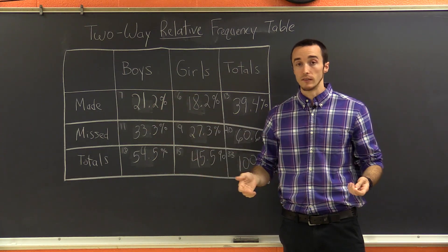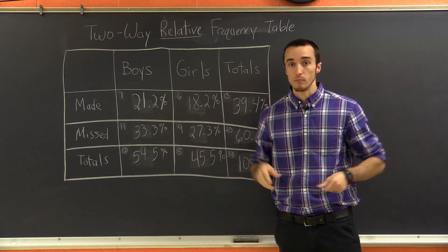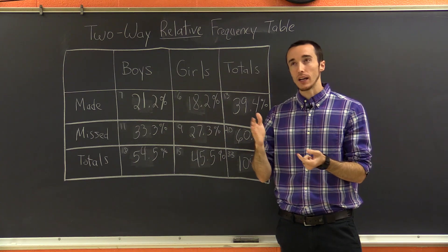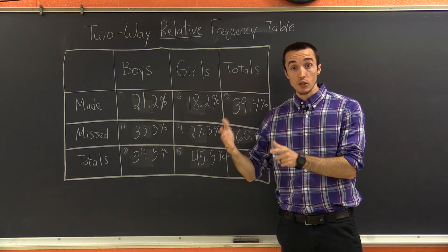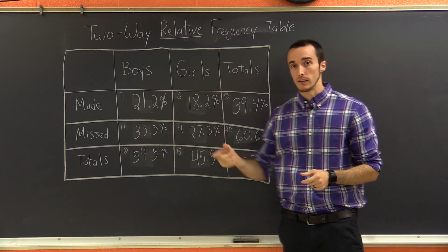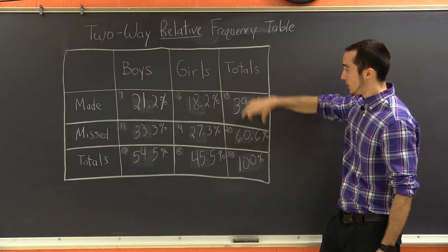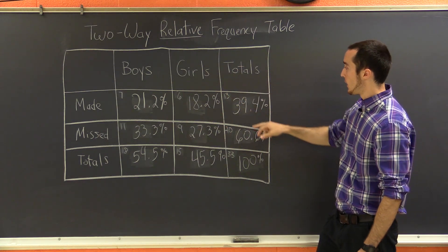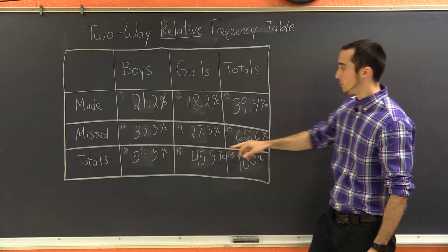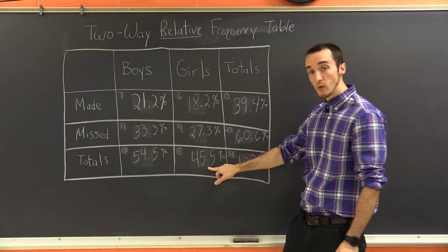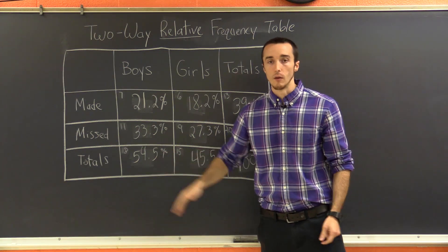Marginal relative frequency, it's just the opposite, the outside percentages. So if you think about like marginal, the margin of your paper is like that area out to the side, well, that's what marginal relative frequencies are. It's the percentages on the outside of the table. So like 39.3%, 60.6, 54.5, 45.5, those are the numbers.